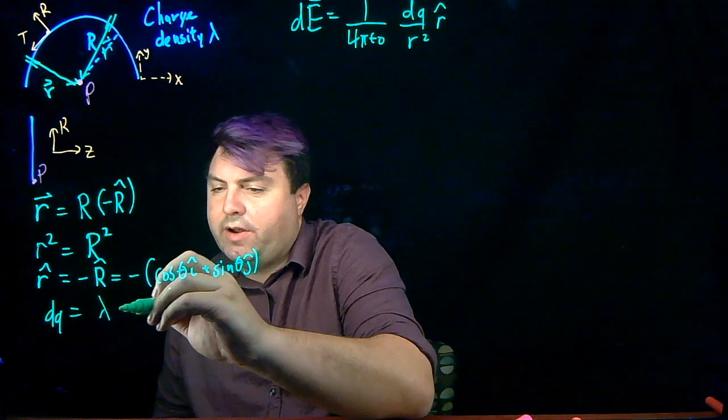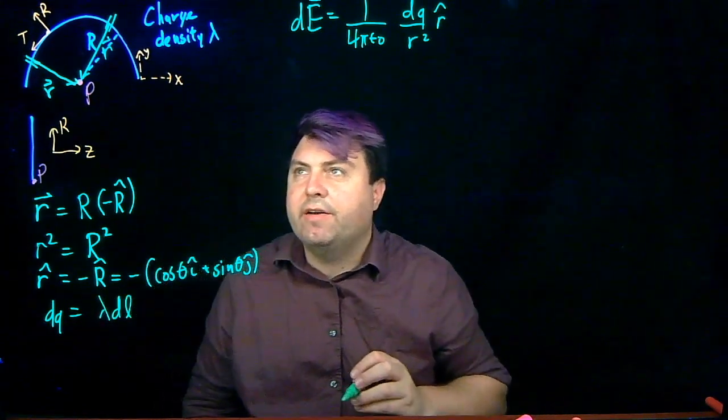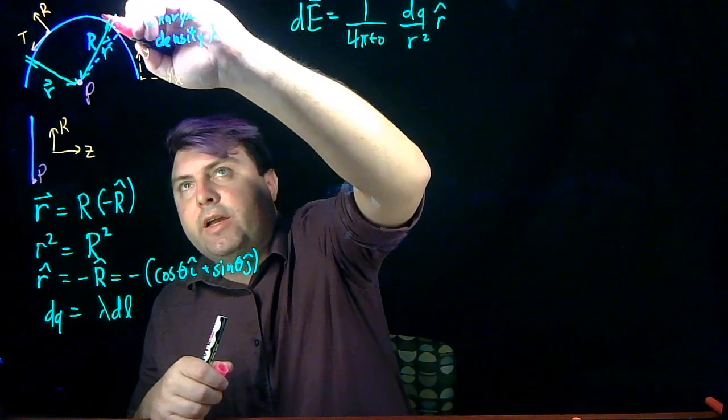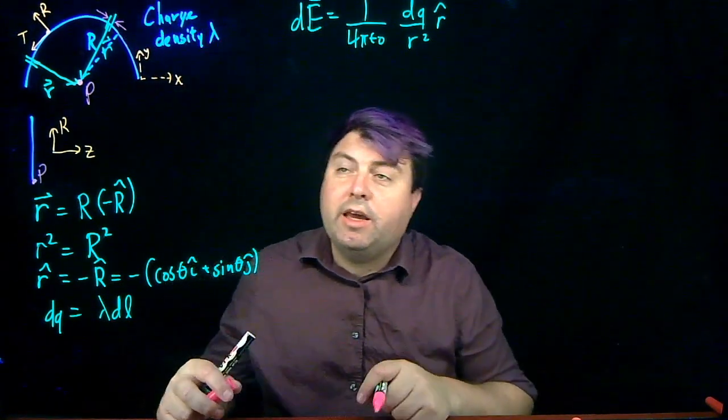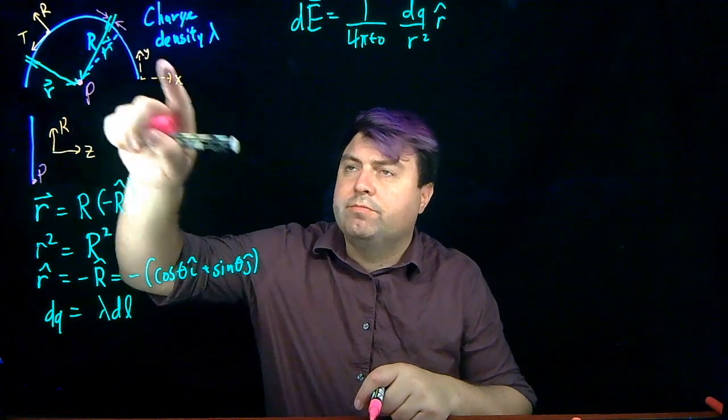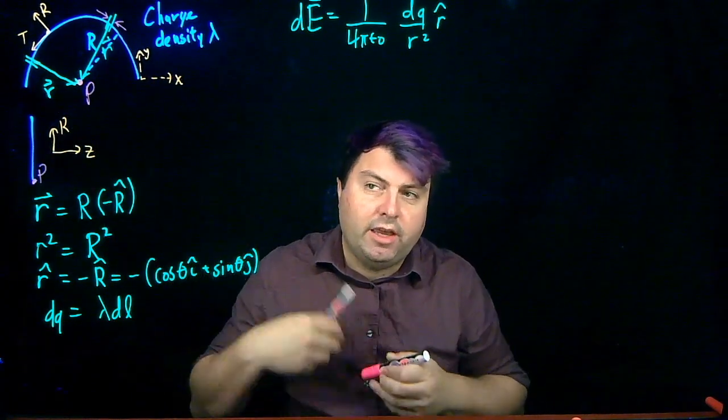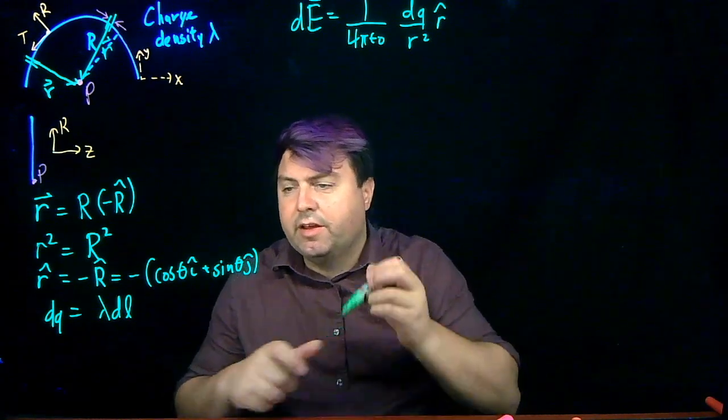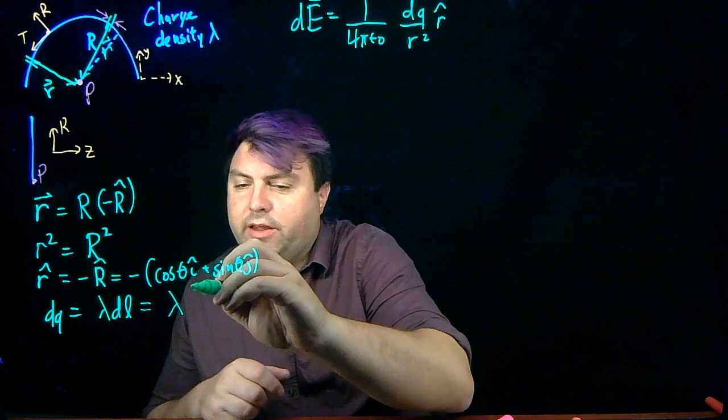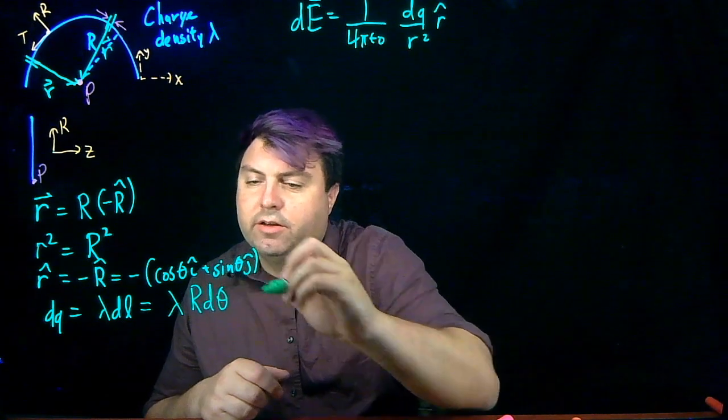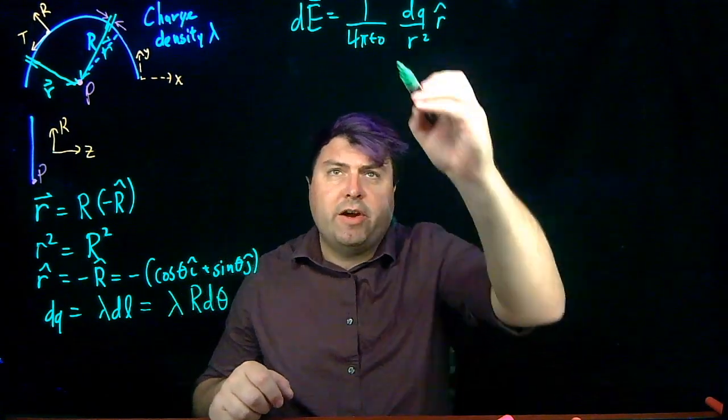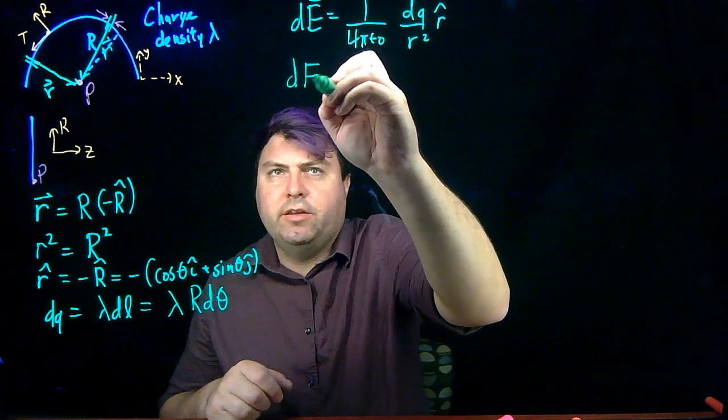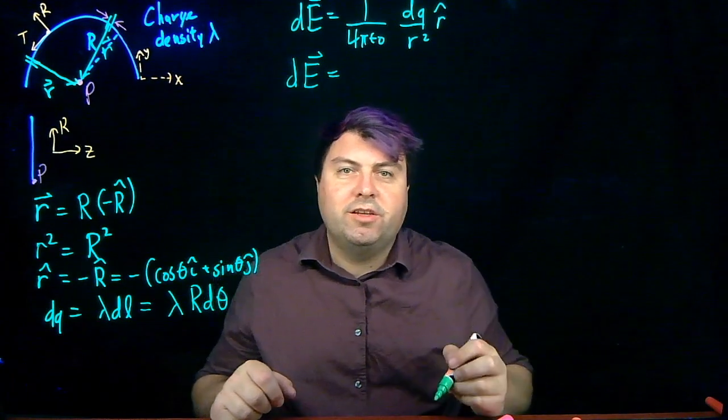My dq I can write as lambda times dl. And now I just need to think what's going on in this kind of length. And again, we know this is circular. So if it's circular, we want something like a circular piece of it. A circular piece of this is an arc length. And so looking up, we can say the arc length is r times dθ. So now I have 1 over 4π epsilon naught. I have dq. I have r squared. I have r hat.